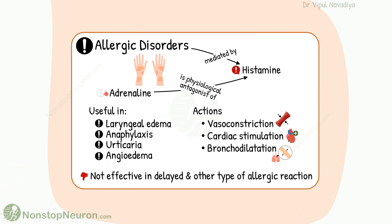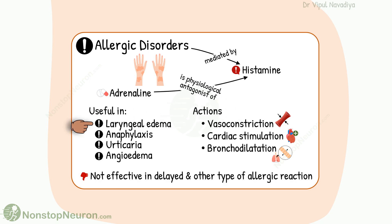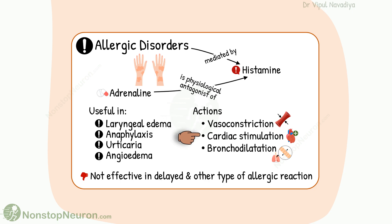Now, allergic disorders. In most allergic reactions, histamine plays a major role, and adrenaline is a physiological antagonist of histamine. This makes adrenaline a very good drug for many allergic reactions, like laryngeal edema, anaphylaxis, urticaria, and angioedema. The useful actions from adrenaline are vasoconstriction, cardiac stimulation, and bronchodilatation. However, it is not effective in delayed and other types of allergic reactions where histamine is not a major mediator.